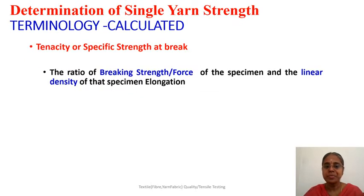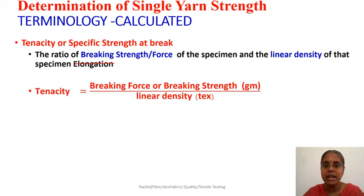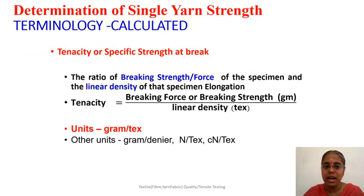Tenacity is an important calculated term — it is the specific stress at break. It is the ratio of breaking force divided by the linear density of the specimen. The usual unit for tenacity is gram per tex. Breaking force is measured in grams and linear density must be converted to tex. Other units such as gram per denier, Newton per tex, and centi-Newton per tex are also used.